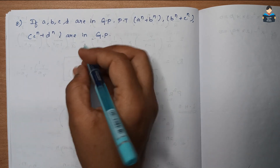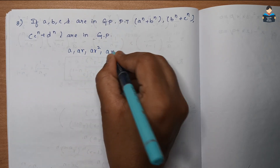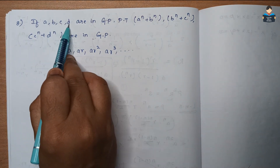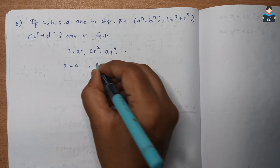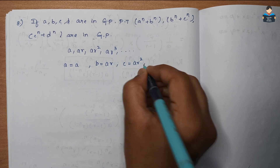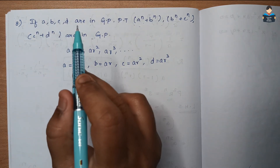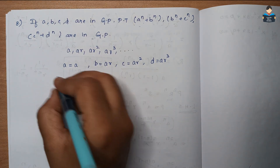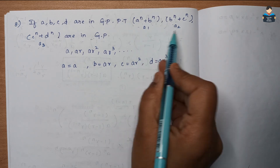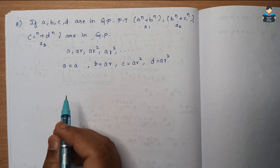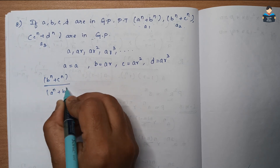Since A, B, C and D are in GP with common ratio R, we write A as the first value, then A·R, A·R², A·R³. We substitute these values into the expressions. A2 by A1 gives us the common ratio.